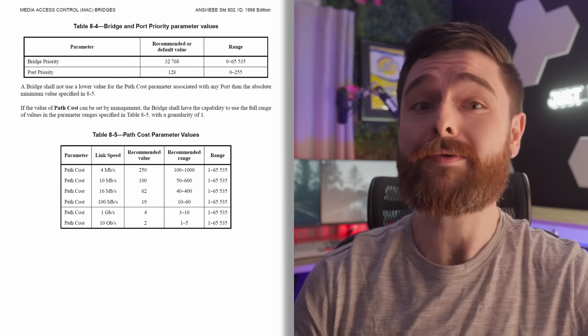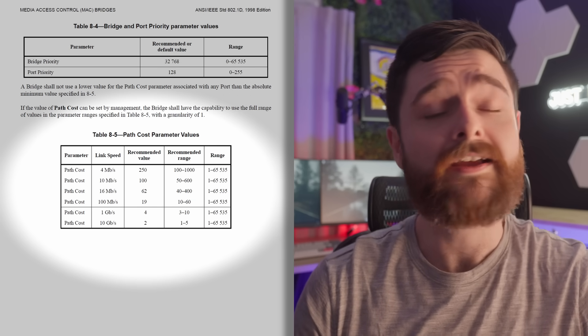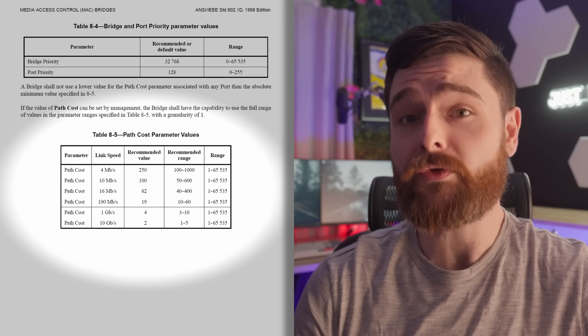Once the group decides who the root bridge is, they need to determine the cost to reach that switch. This is how they determine the most efficient way to get to this switch and where to place the block. Every hop it takes to get to this root bridge, they're going to increase a value — incremented by ranges shown on the screen, which are based on port speeds. Some switches do allow you to manually change this, but most of them will use this amount. In most modern, simple STP setups, you don't have to worry about this, especially for small businesses. You just need to ensure that your switches have the correct priority set and they'll figure out the rest.